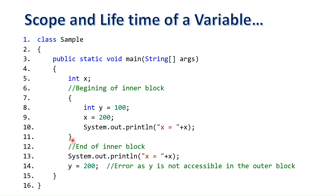When the block terminates, the lifetime of the variable is also gone. The scope of the variable is within the block. Here, y has been declared within the inner block, but we are trying to access it from outside the block. The statement y equals 200 causes an error because y is not accessible in the outer block.